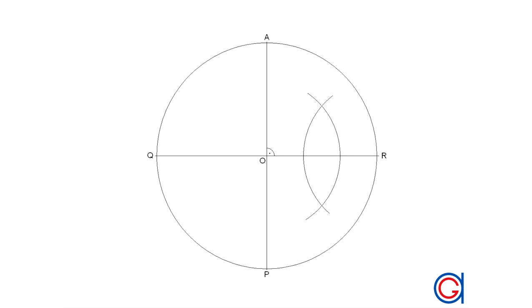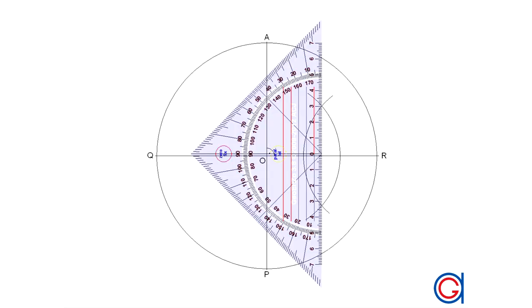These two arcs intersect at two points. And now we will join these two points. And where it cuts the radius OR, this will be the midpoint M of the radius.